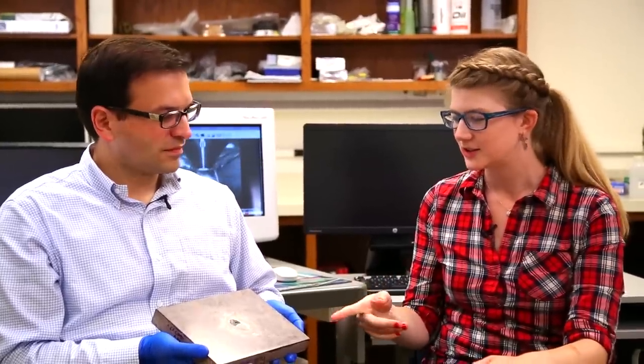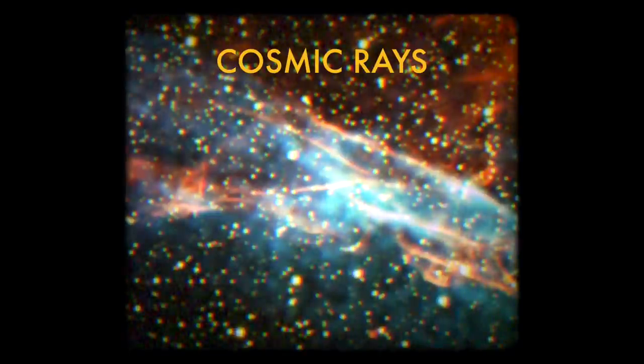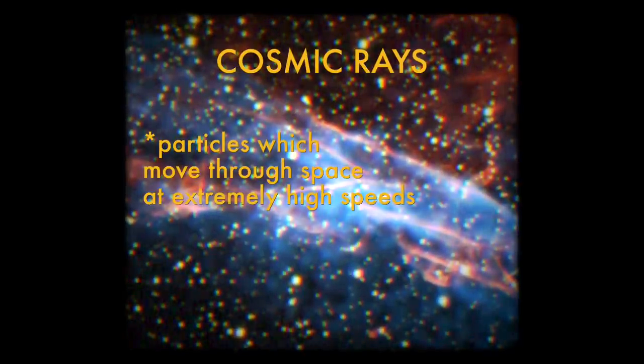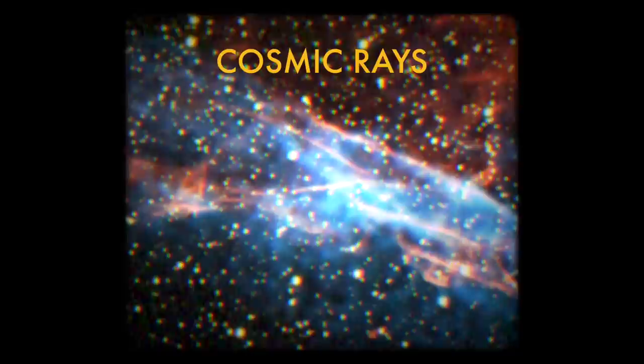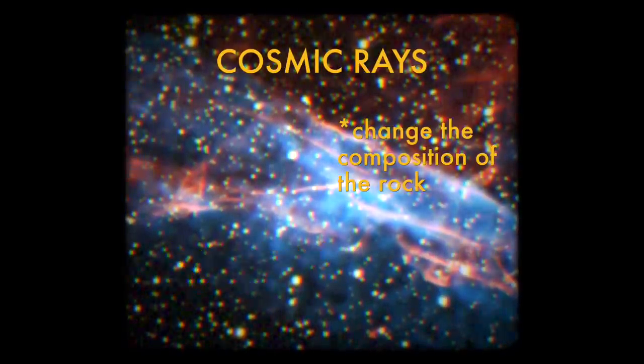How are we able to age this meteorite? We do that by cosmic ray exposure age dating. So when the meteorite flies through space, it gets hit by cosmic rays. Cosmic rays are particles which move through space at extremely high speeds. And they hit the rock and they not only get implanted in the rock, but they actually change the composition of the rock. They're hitting it so fast that like other elements or things, atoms get knocked off of it. Yeah.